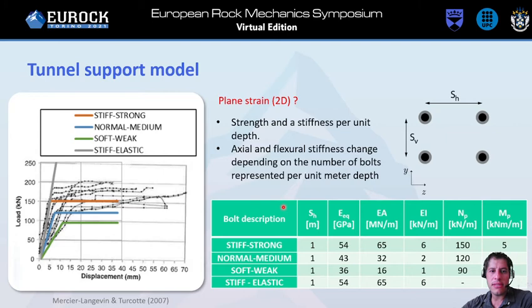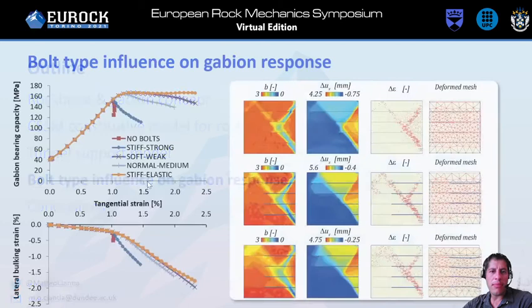These are the four types of bolts that we analyzed: the stiff strong ones, elastic, normal medium, and soft weak in green. The properties are shown in the table. More detail again in the paper. So, what is the influence on the gabion response?